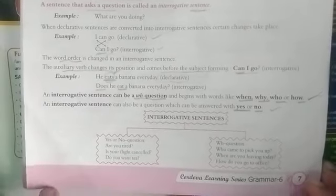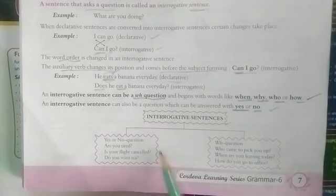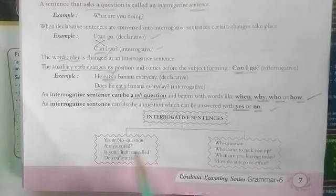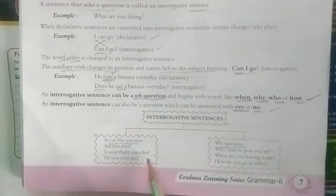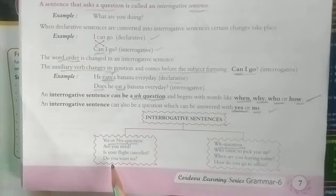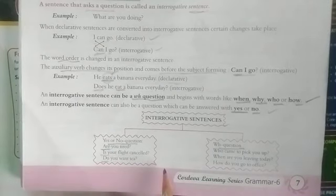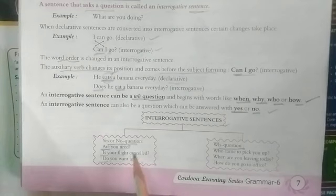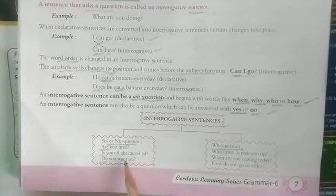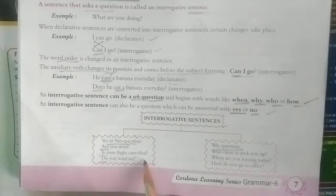At the bottom of the page you can see interrogative sentences in a table form — yes/no questions and WH questions. Yes/no questions start with 'be'-type verbs or 'do'-type verbs: 'Are you tired?' 'Is your flight cancelled?' 'Do you want tea?' — the answers to all three will be yes or no.